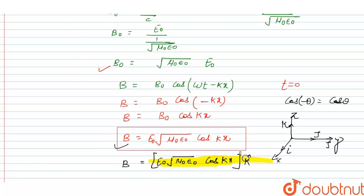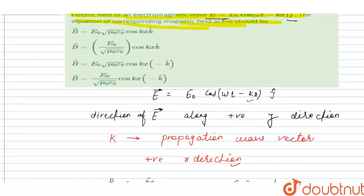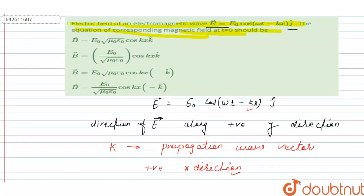When we see the options of this question, option A is the right answer: E0 · √(μ0ε0) · cos(kx) · k̂, with the direction of the magnetic field along the positive z direction.